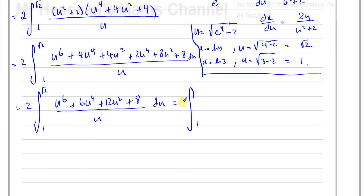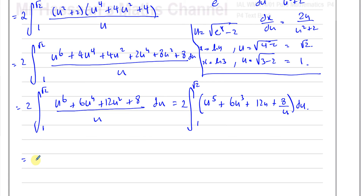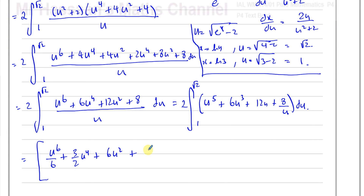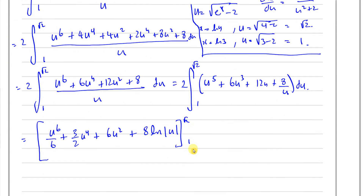Now I can integrate each term individually. With limits √2 and 1, the integral becomes 2 · [u⁶/6 + (3/2)u⁴ + 6u² + 8 ln|u|] evaluated between √2 and 1.